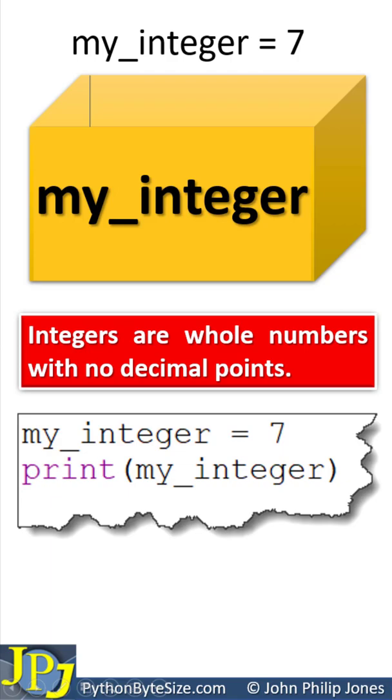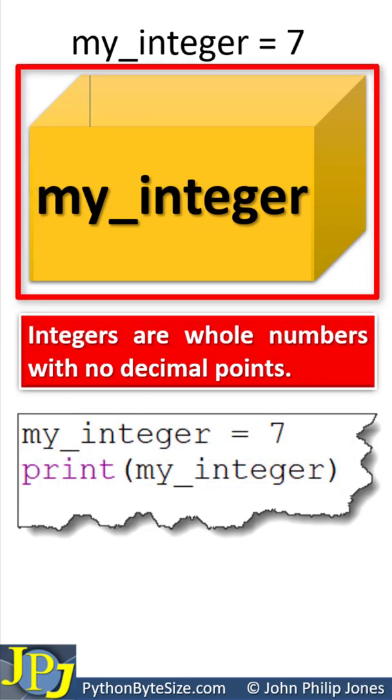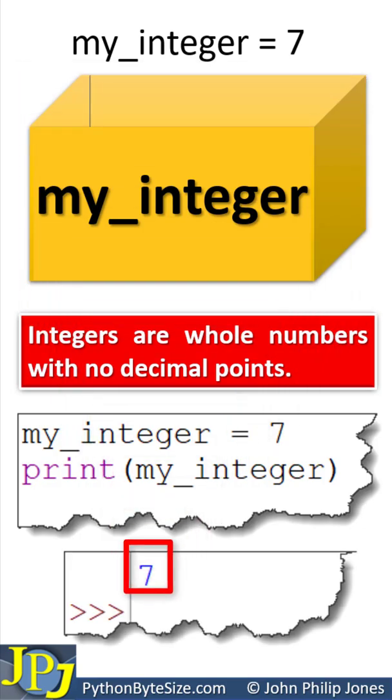Consider this computer program, and you can see my_integer is assigned 7. And here we're going to print my_integer, which means going to this box, taking the copy that's in the box, which will be 7. And this is the runtime, and you can see 7 is output.